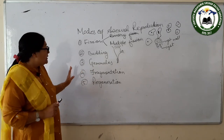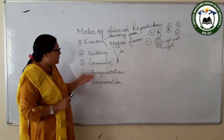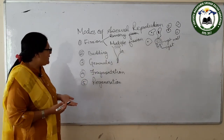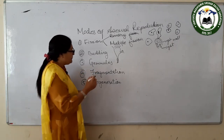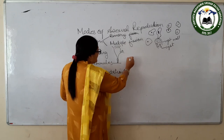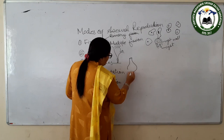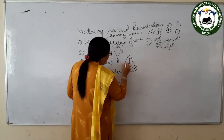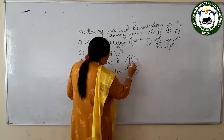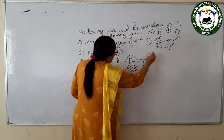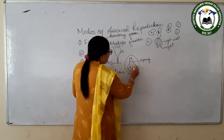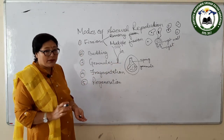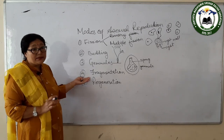The third mode is gemmules — gemmules are internal buds. In organisms like sponges, we find these internal buds called gemmules, found in both marine and freshwater sponges. They remain covered by a membrane.